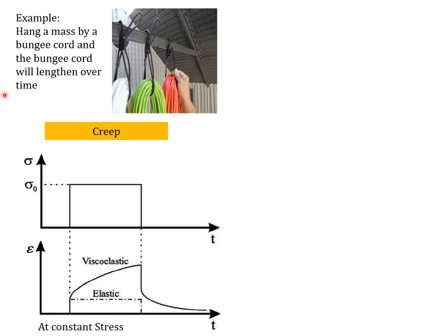Viscoelastic behaviour can be seen in two phenomena. The first one is creep. For example, if we hang a weight by a cord, with the passage of time the length of this cord will increase. The stress is constant, but the deformation will be increasing with the passage of time — if you put that weight there for one day, two days, three days, its length will keep increasing. We apply constant stress, there will be an initial strain, and then with the passage of time this strain will be increasing. When we remove it, there will be an immediate recovery and then relaxation.